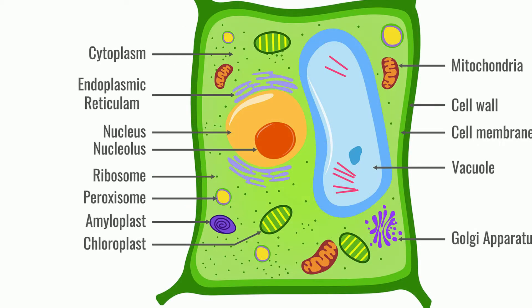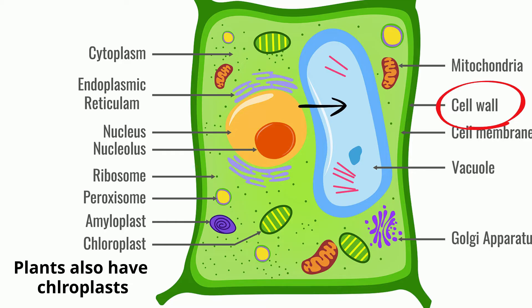The cells of plants have a cell wall made of cellulose. This cell wall provides protection and shape. Most plant cells also have a large central vacuole.